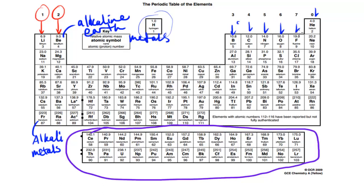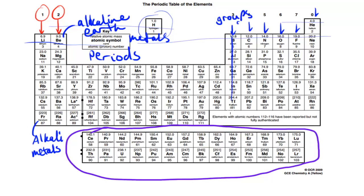Hydrogen has properties similar to both the group one elements and the group seven elements, so it's mainly sitting on its own independent island — we don't really put it into a group, though sometimes it is seen as a group one element. If we look at the horizontal rows, we call these periods. So the vertical columns are groups and the horizontal rows are periods. We have period one up here — hydrogen and helium are in period one — then period two, three, four, and five.